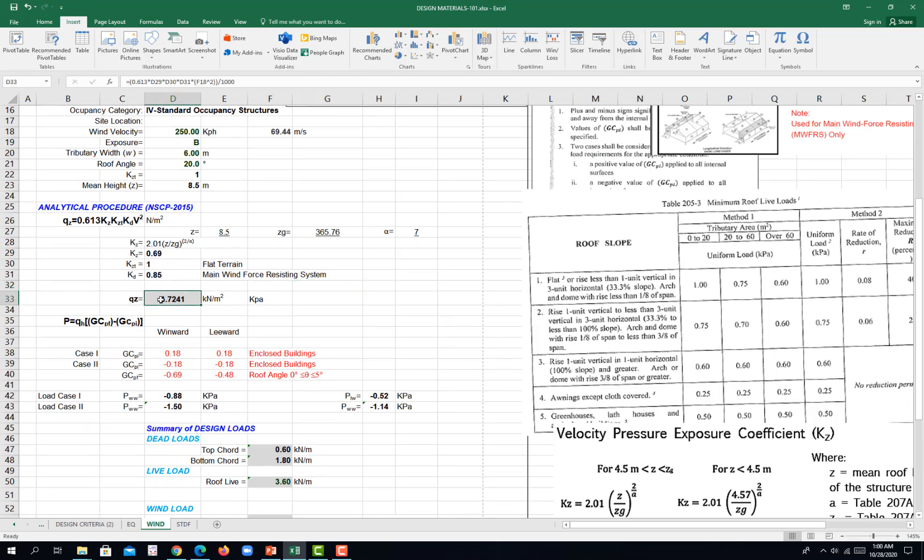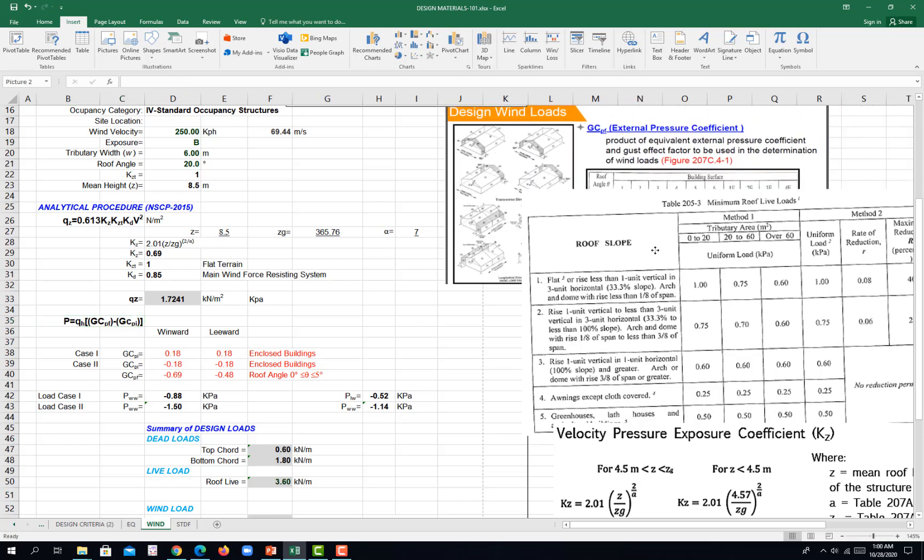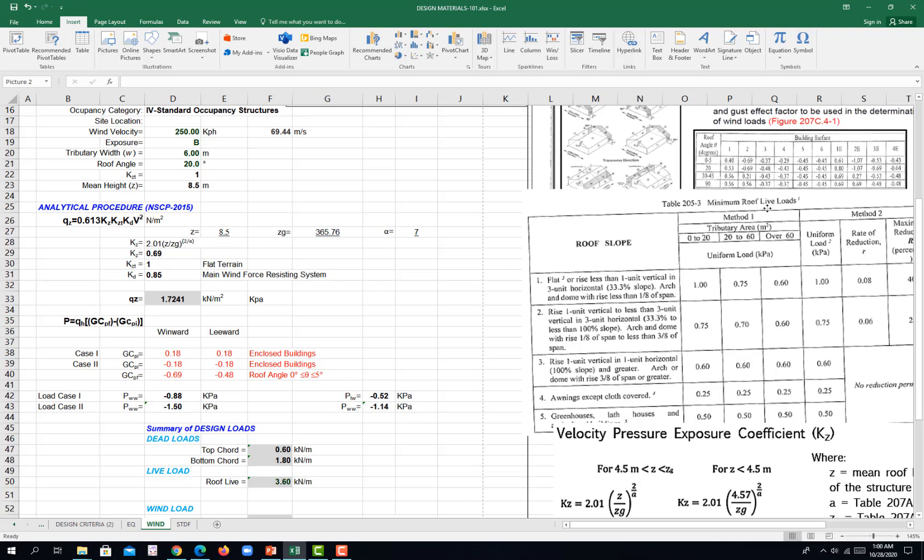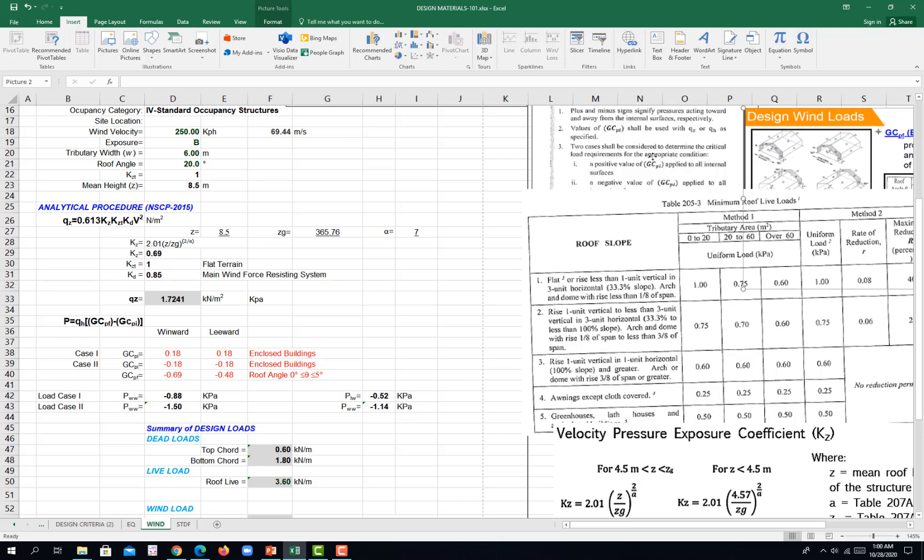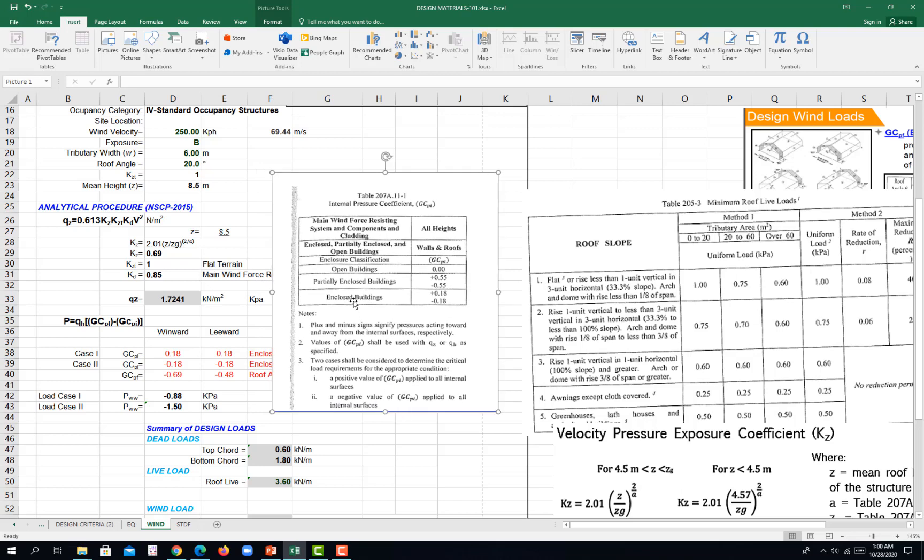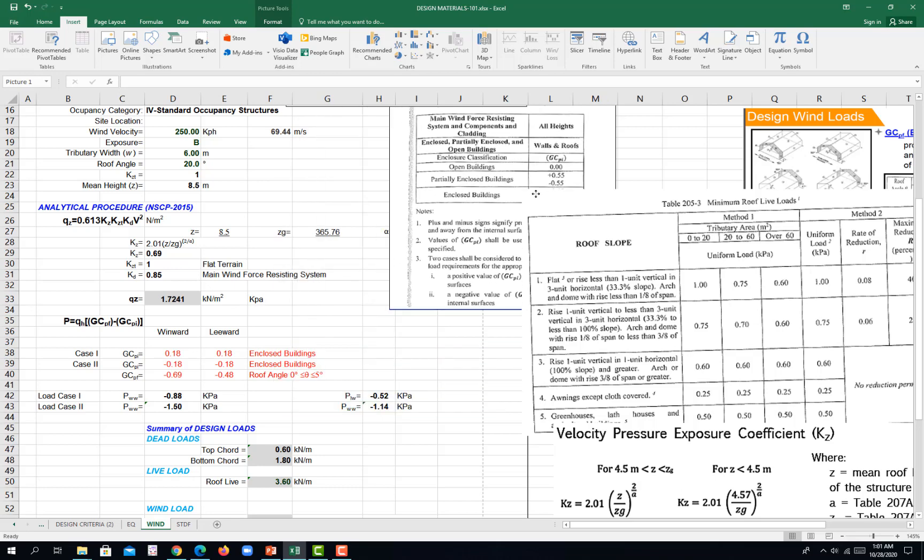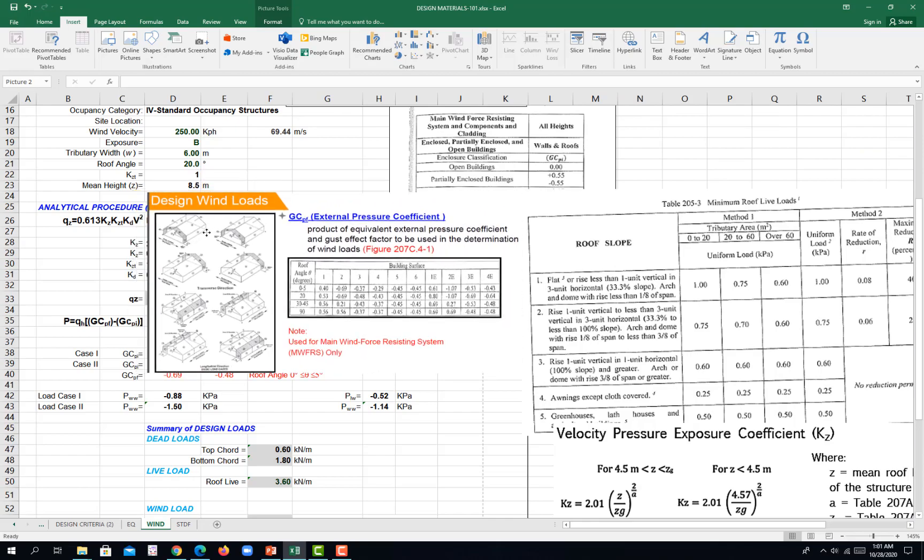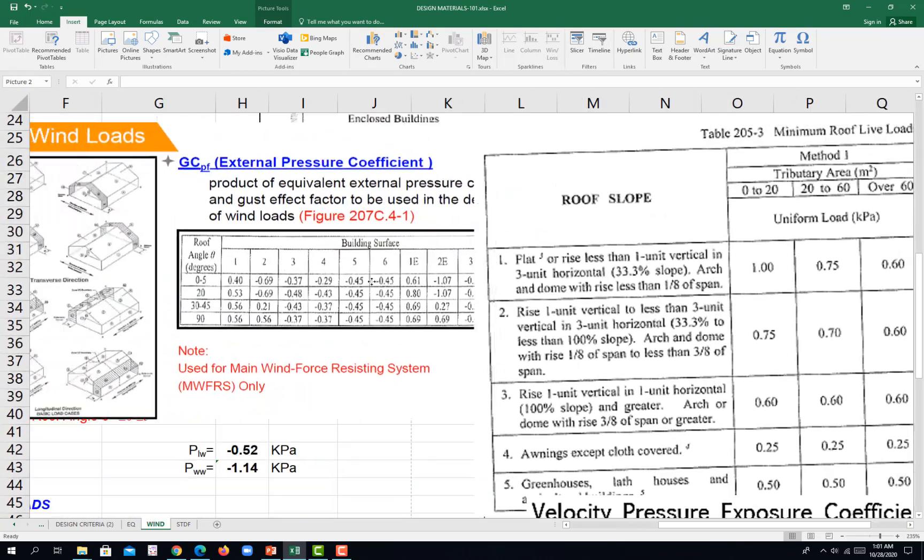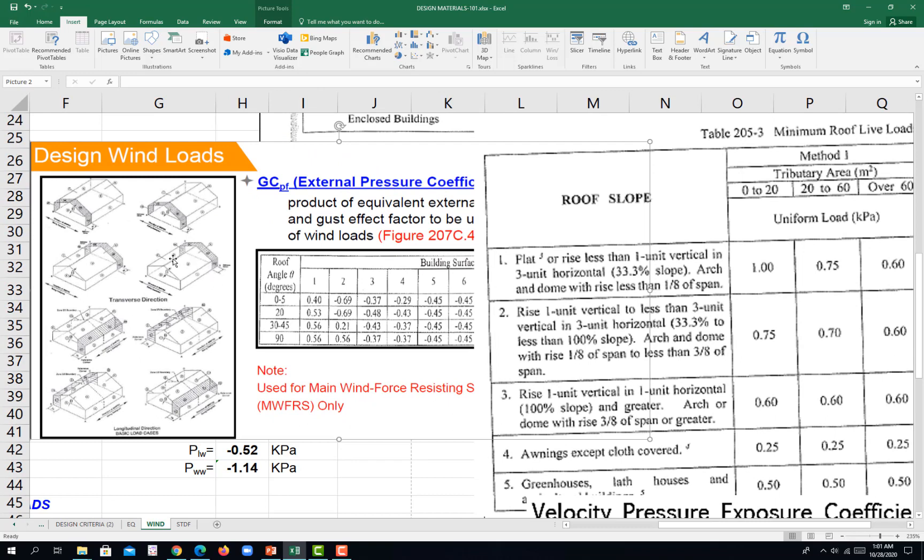Now this pressure is assumed to be horizontal. Now we transmit this pressure perpendicular to our member on this formula. So QH here is equivalent to QZ times the sum of those external and then internal pressure coefficient. So you have GCPI. Assuming enclosed building on table 207A.11-1, enclosed building, you have two values. So you try to account these two values, positive and negative, 0.18.